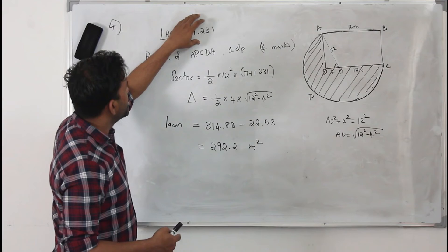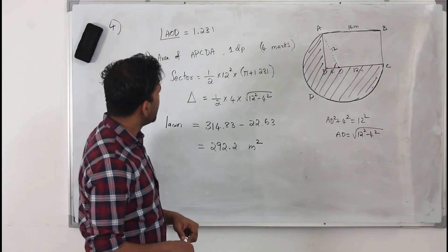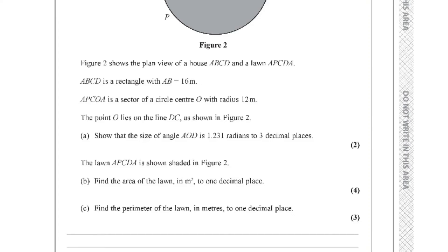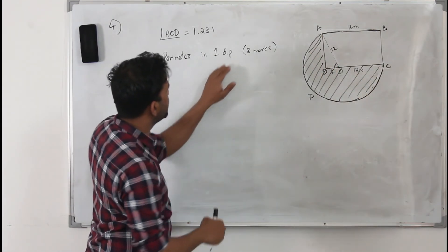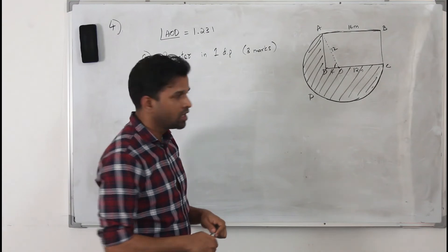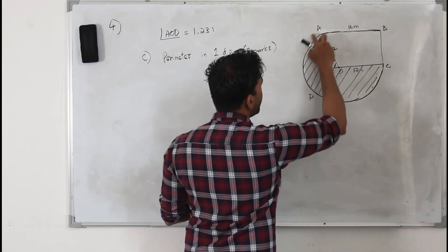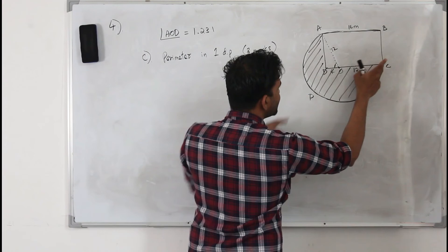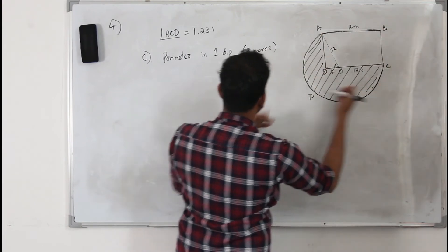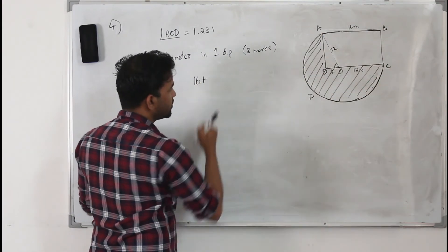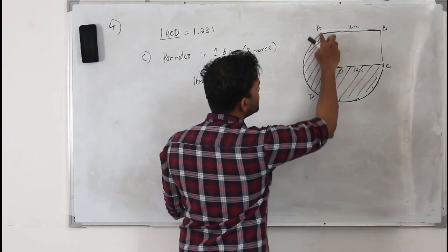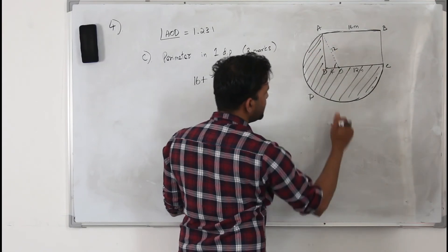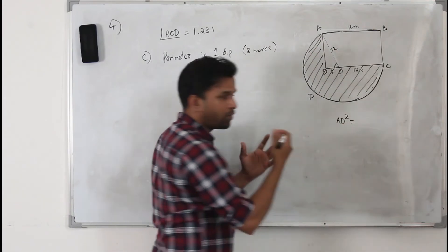Part C says: find the perimeter of the lawn APCDA in one decimal place. This question carries three marks. To find the perimeter you need to add the length of all boundary lines. We know the full length is 16, so we add 16. Then we add the breadth of the rectangle, which is AD — using the right angle triangle, AD equals the square root of 12 squared minus 4 squared.